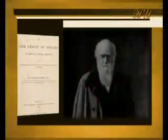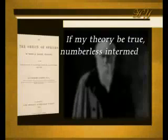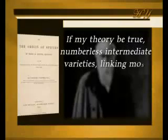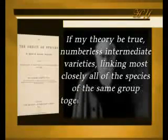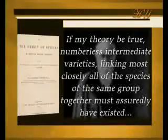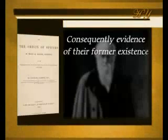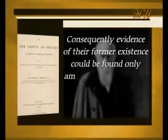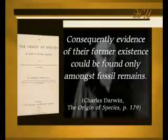Darwin, who was well aware of this fact, said in his book 'The Origin of Species': 'If my theory be true, numberless intermediate varieties, linking most closely all of the species of the same group together, must assuredly have existed. Consequently, evidence of their former existence could be found only amongst fossil remains.'